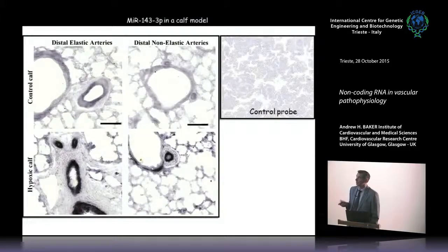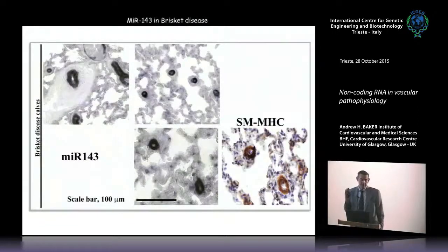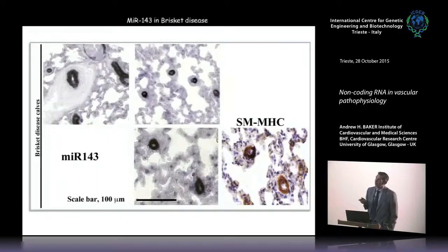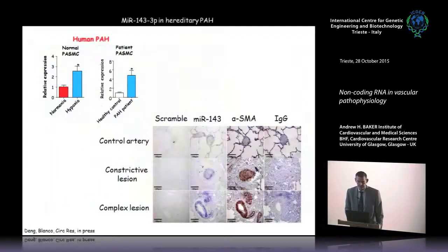Particularly notable are 'brisket disease' calves reared above 2,800 meters in Denver that die from spontaneous pulmonary hypertension. Post-mortem analysis of remodeled vessels shows miR-143 is still very highly expressed at the time of death — activated early and maintained — suggesting it plays an important ongoing role. In human constrictive pulmonary lesions, miR-143 is also activated by in situ hybridization and qPCR.